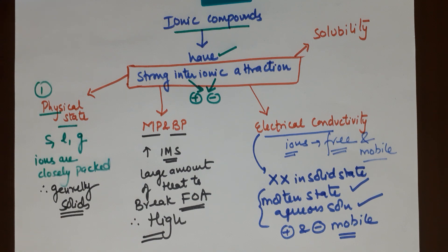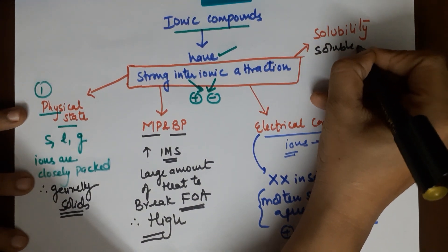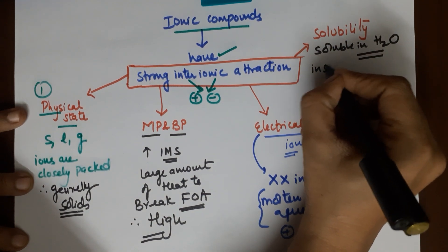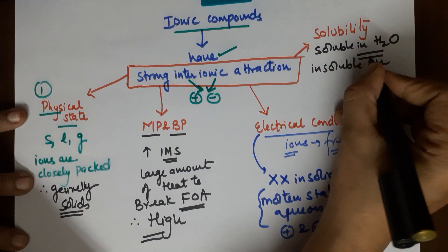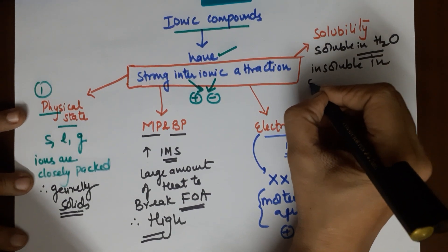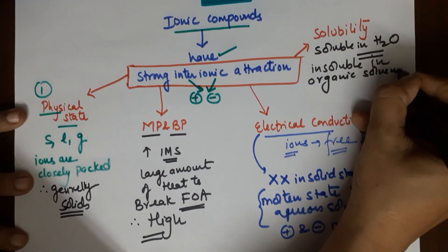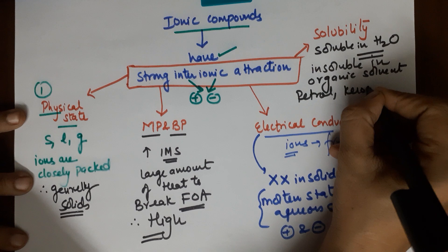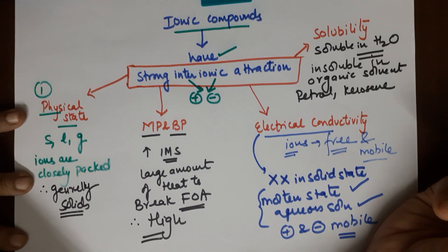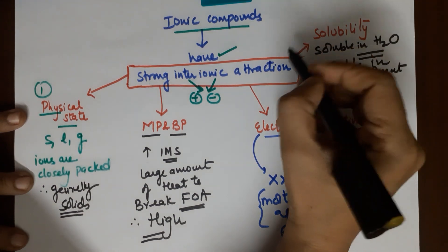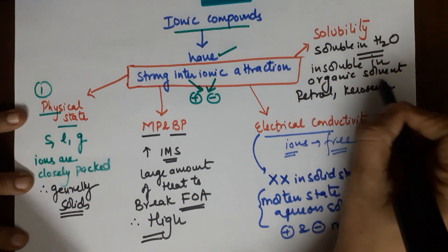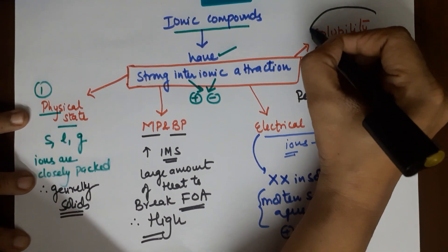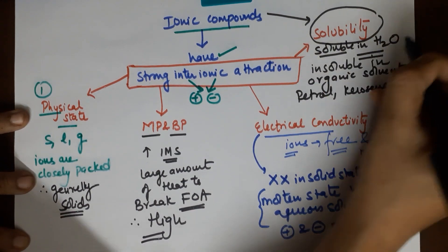The last property is solubility. Ionic compounds are soluble in water — they are water-soluble. Common salt, for example, is water-soluble. They are insoluble in organic solvents. Organic solvents are carbon-containing solvents — for example, petrol, kerosene, diesel, benzene. These are carbon-based solvents, and ionic compounds will never be soluble in these particular solvents. So solubility of ionic compounds is with respect to water.